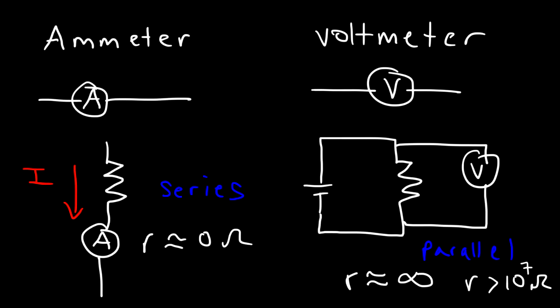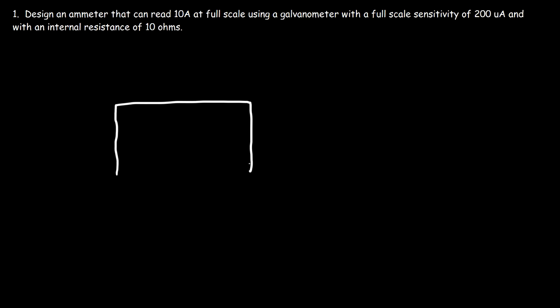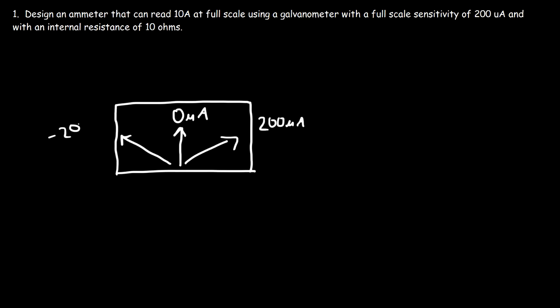You want the voltmeter resistance to be something like 10 to the 7 ohms, which is about 10 megaohms or higher. Now let's work on a problem showing how a galvanometer can be used as an ammeter. This particular galvanometer has a full-scale sensitivity of 200 microamps. At zero it reads 0 µA, at full deflection 200 µA, and on the left side negative 200 µA if you reverse the polarity. We want to design an ammeter that reads zero to 10 amps — so full deflection represents 10 amps instead of 200 µA.